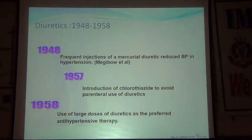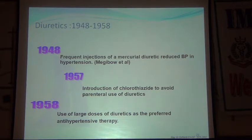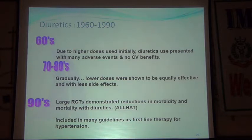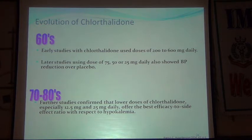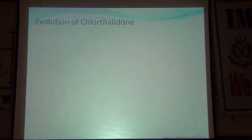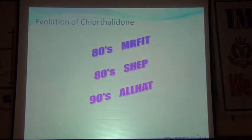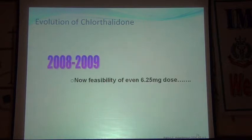Diuretics started in 1948 with mercurial diuretic injections as antihypertensives. In 1957 we got chlorothiazide tablets. Large doses were used initially, causing many side effects, so it fell out of favor. Then in the 1970s-80s, the concept of lower doses being equally effective with less side effects emerged. In the 1990s we got the ALLHAT trial providing major guidelines. By 2008-2009 we knew that even 6.25 mg of chlorthalidone could be used as first-line treatment.